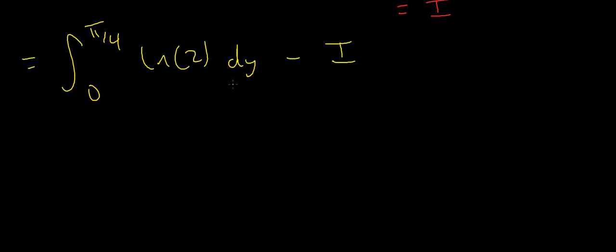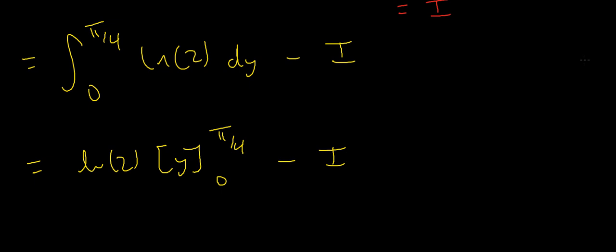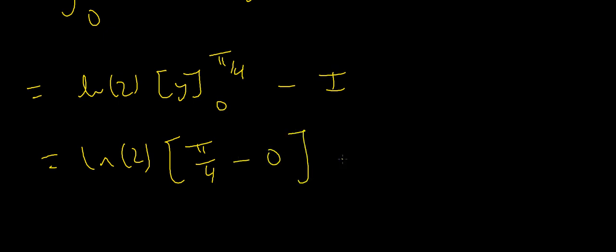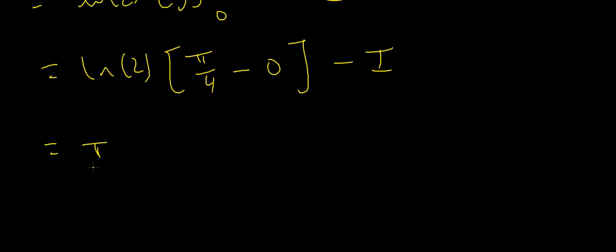So I equals the integral from 0 to π/4 of ln 2 dy, minus I. The natural log of 2 is a constant, so integrating it gives ln 2 times y, evaluated from 0 to π/4. That gives ln 2 times (π/4 minus 0), which is π/4 · ln 2, minus I.